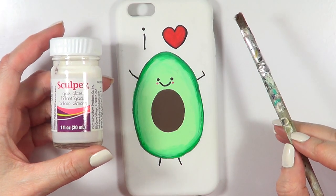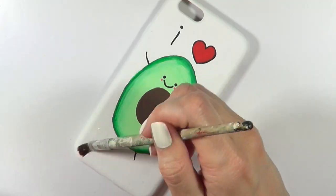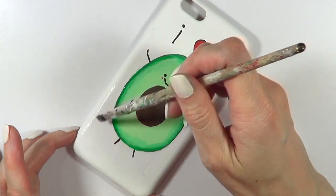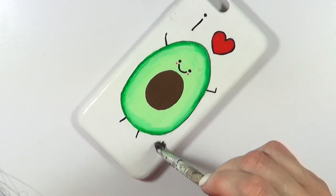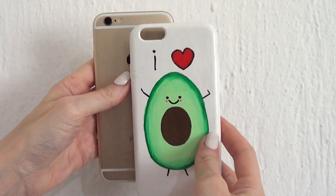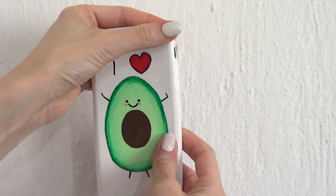And then once this is dry, I'm going to be adding a gloss to it. I'm using this by Sculpey and a brush. I'm going to be covering the whole thing, giving this a few coats until it's shiny and I can no longer see the brush strokes anymore. And yeah guys, this is the phone case idea that I want to share with you.